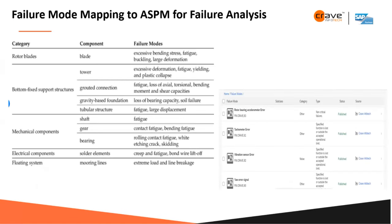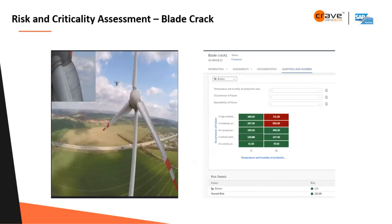The main master data for ASPM modeling is failure modes. Failure modes will have the failure mode, cause, and effect. In wind turbines, these failure modes are already available in your organization — most organizations are keeping them in Excel. Instead, you can move all that failure mode data into SAP, enabling your system to do different analysis from there.